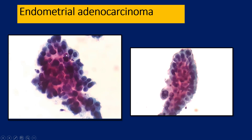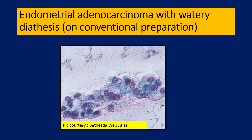Watery diathesis is not very well appreciated on liquid-based cytology preparation — it is better seen on conventional preparation. This is a picture from the Bethesda Web Atlas. The villoglandular type of endocervical adenocarcinoma is different — in villoglandular endocervical adenocarcinoma the nuclei are far more bland. This picture is from the Bethesda Web Atlas for watery diathesis.